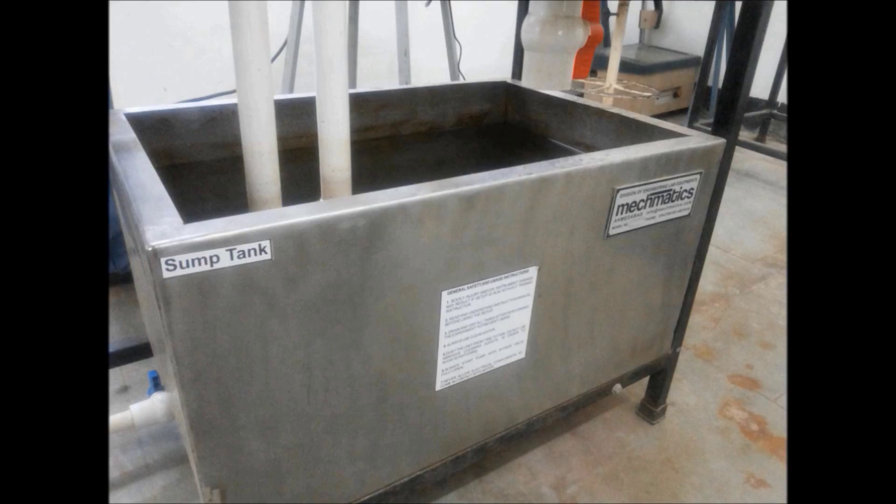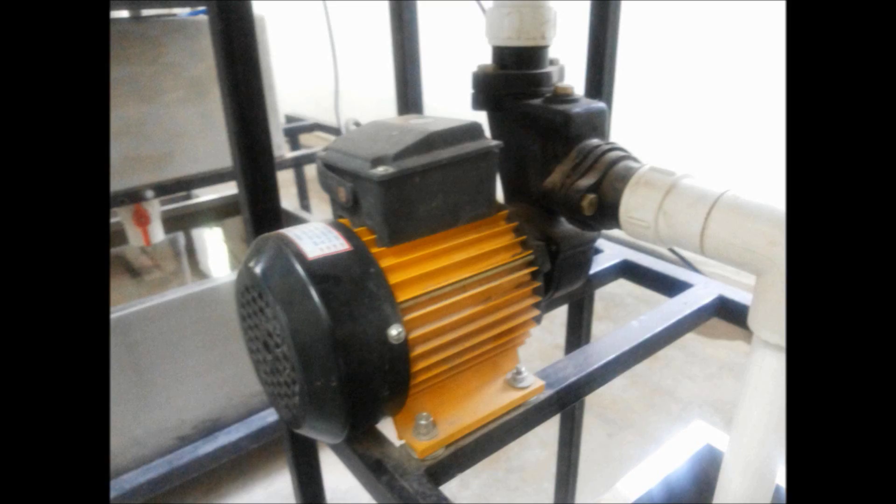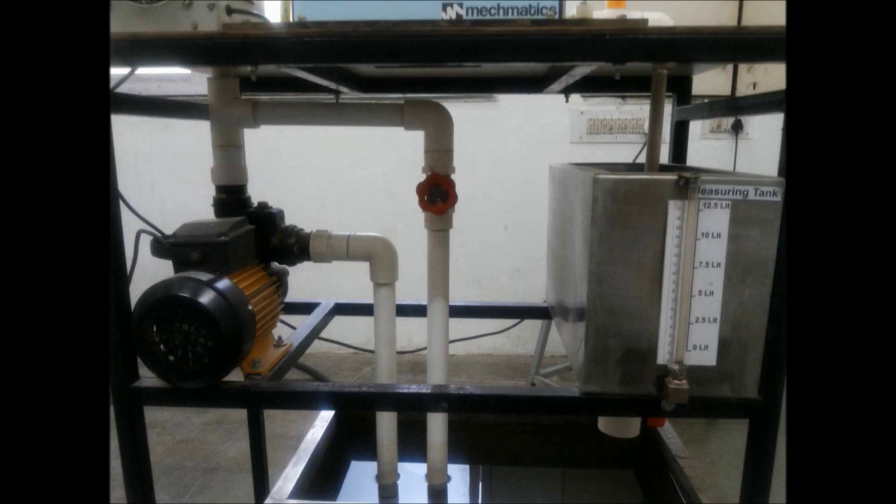Now as you can see, the water from the sump tank passes through the pipeline with the help of the pump. Another pipeline is provided in order to adjust and regulate the flow of water which enters into the cylinder, and the rest is returned back to the tank.